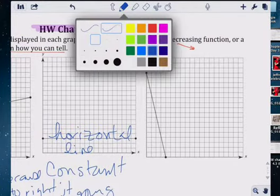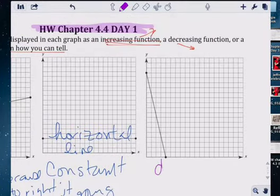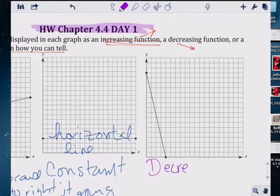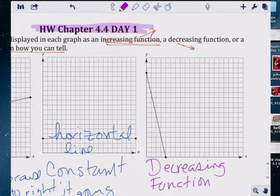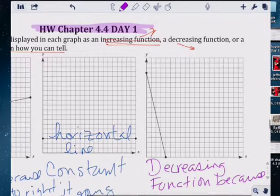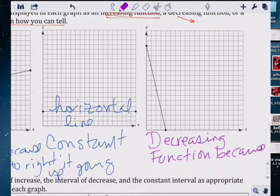This one is a decreasing function because from left to right, it's going down. Or you can say from zero, here's zero, it's going down.